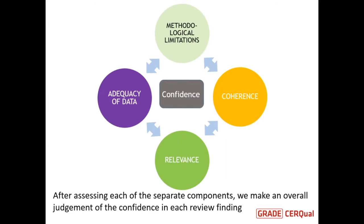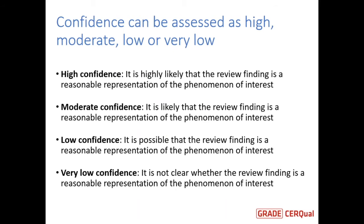Once we've done an assessment of each of the four CERQual components, we need to make an overall assessment by drawing together the different assessments for each component. This overall assessment can be high, moderate, low, or very low. If we say we have high confidence in a finding, we're saying it's highly likely that the finding is a reasonable representation of the phenomenon of interest. A very low confidence finding suggests that it's not clear whether the finding is a reasonable representation of the phenomenon of interest, and the other two levels fall in between.